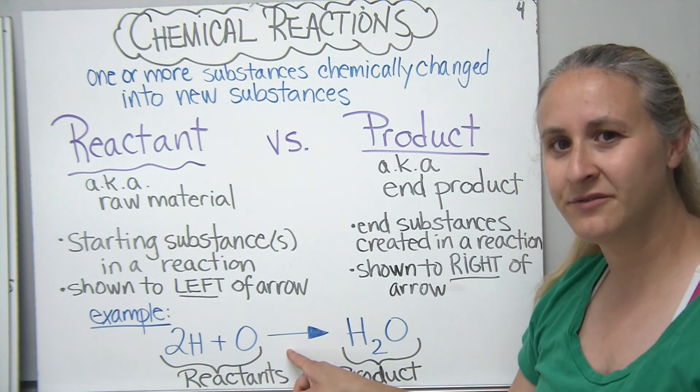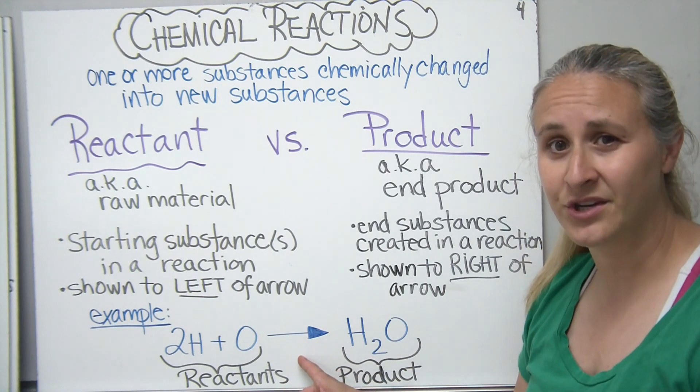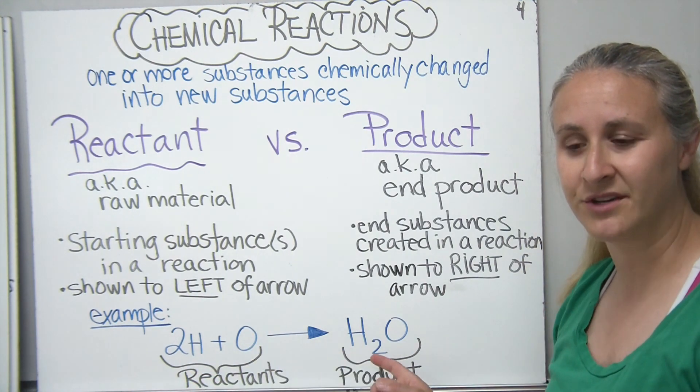So two hydrogens and one oxygen. These are shown to the left of our arrow, and these are considered to be our reactants. The arrow represents the reaction occurring, so I'm following the reaction from left to right.